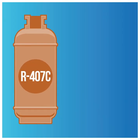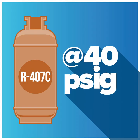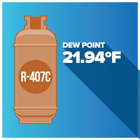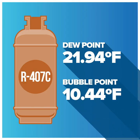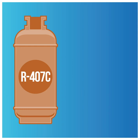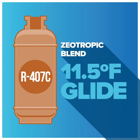For example, R407C at 40 PSIG has a dew point — that's the point of condensation — of 21.94 degrees Fahrenheit, and a bubble point — the point of evaporation — of 10.44 degrees Fahrenheit. This means that this particular zeotropic blend has approximately 11.5 degrees Fahrenheit of glide.